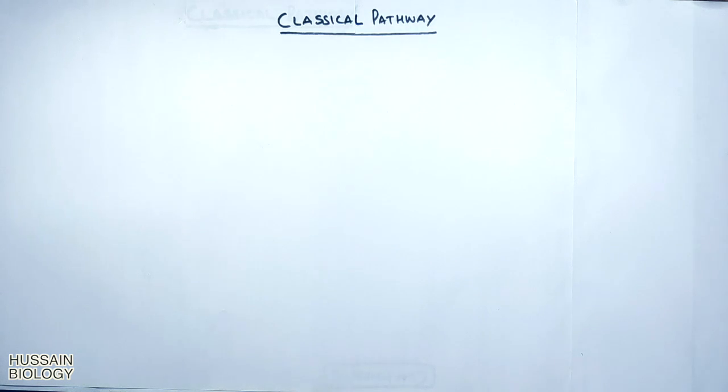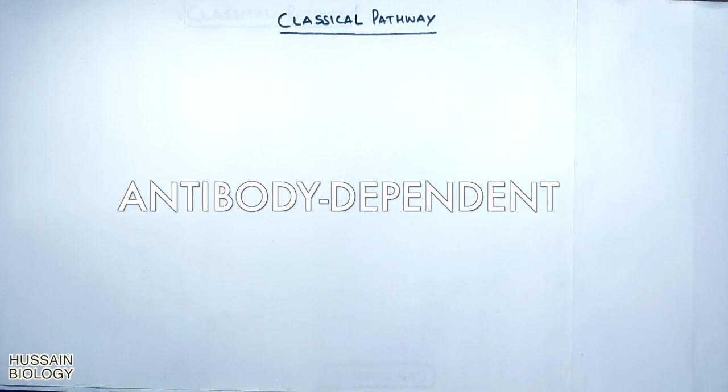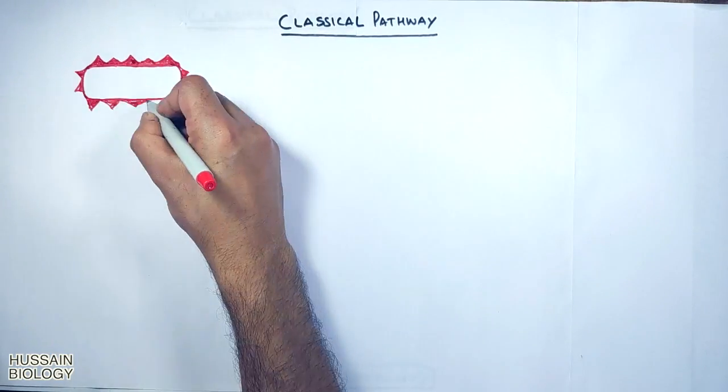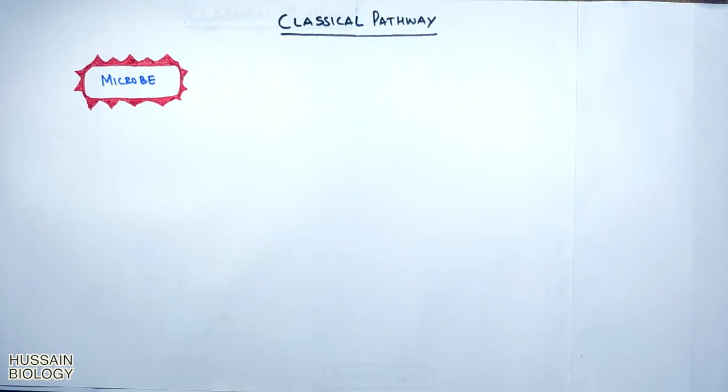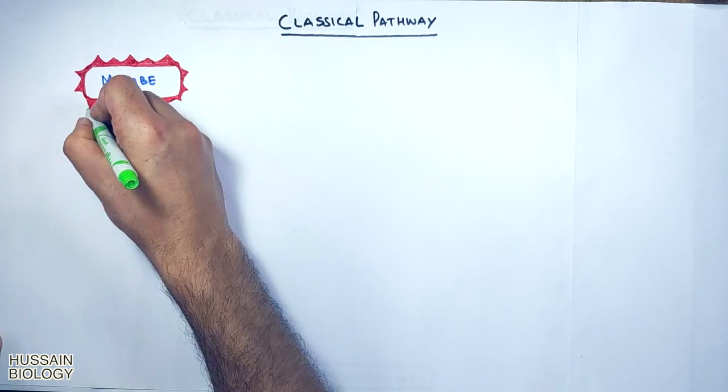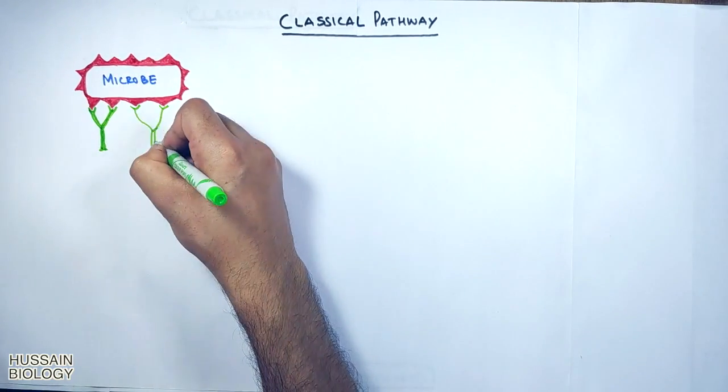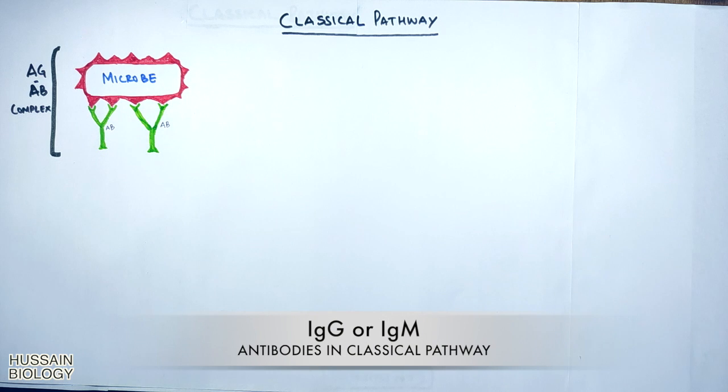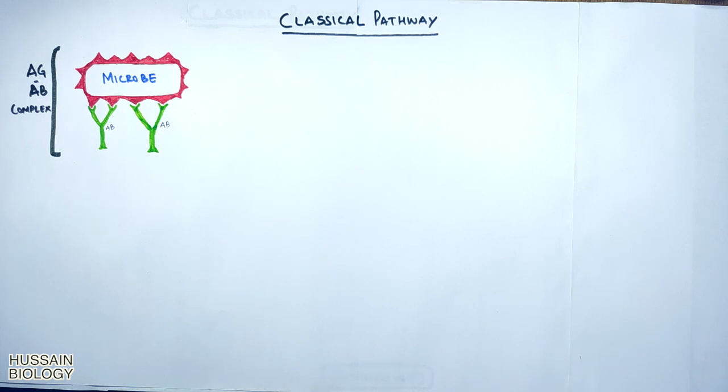The classical pathway is antibody dependent pathway. In this diagram we can see the microbe or pathogen in the circulation. To launch the classical pathway, the antibody attaches with the microbe as shown, giving us the antigen antibody complex. The antibody here is IgG or IgM antibody.